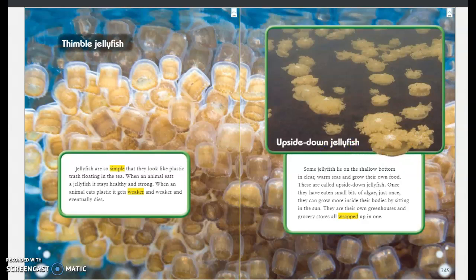This is an upside-down jellyfish. Some jellyfish lie on the shallow bottom in clear, warm seas and grow their own food. These are called upside-down jellyfish. Once they have eaten small bits of algae just once, they can grow more inside their bodies by sitting in the sun. They are their own greenhouses and grocery stores, all wrapped up in one.